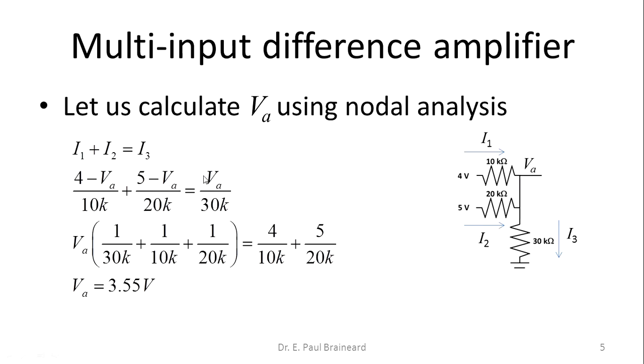It is a simple nodal analysis problem. The current I1 is 4 minus VA divided by 10k, and the current I2 is 5 minus VA divided by 10k, which equals the current I3 where I3 is VA divided by 30k.